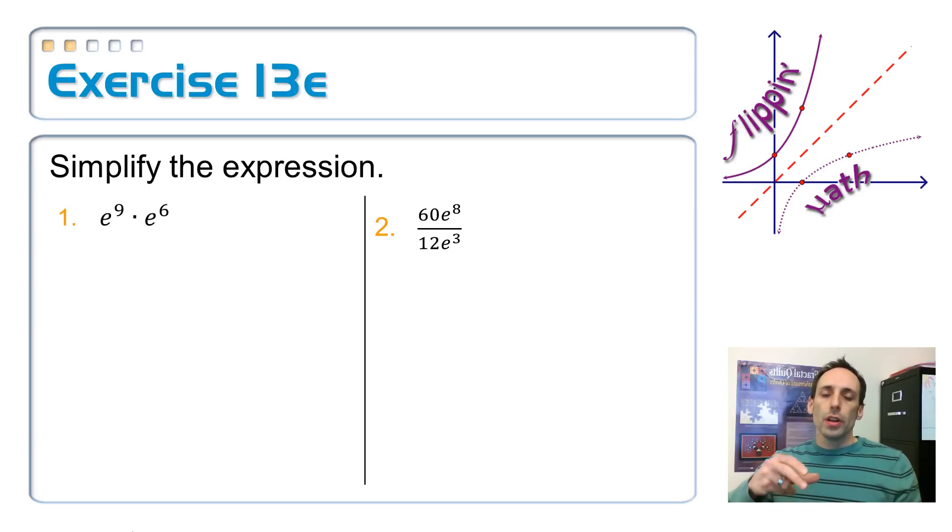So whenever you have E in an expression, you treat it just like you would pi. So if you want an exact answer, you simplify it, you treat it kind of like a variable. So on number one, we're simplifying this expression, E to the ninth times E to the sixth. I'm just treating that like it's an x value. Same base, I add the exponents, E to the fifteenth power. That's all that's asking to do.